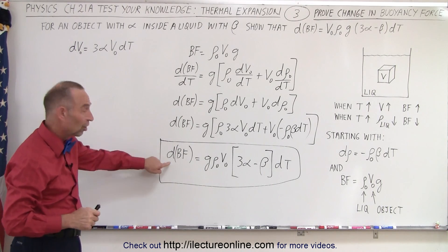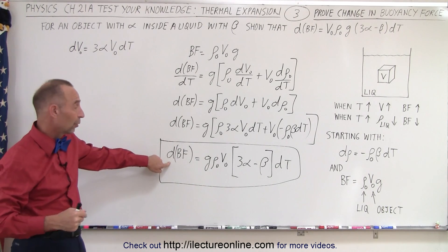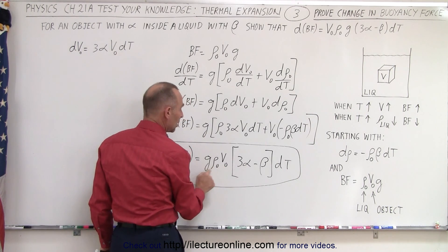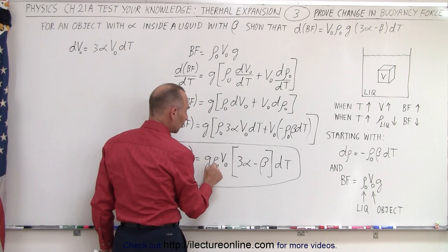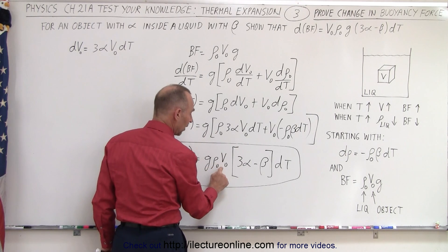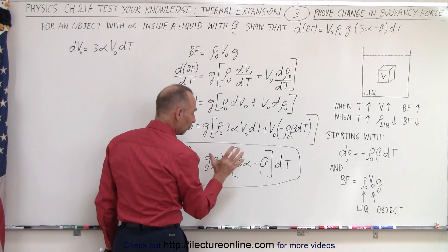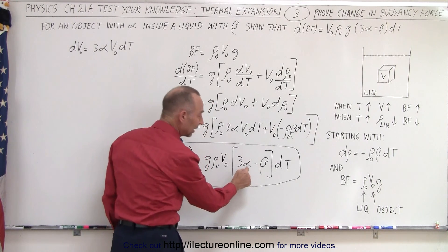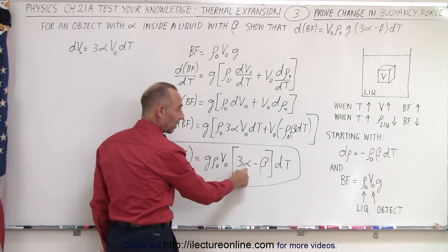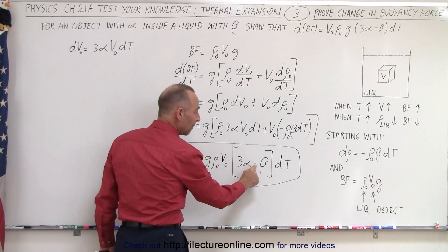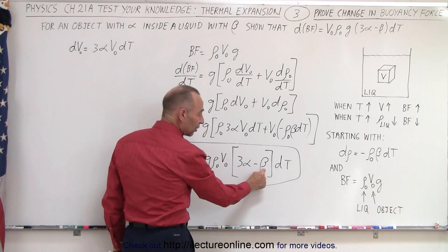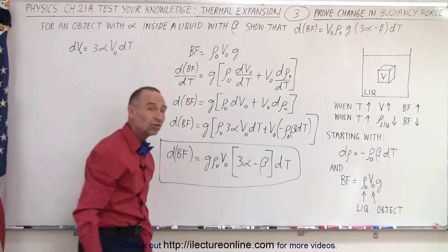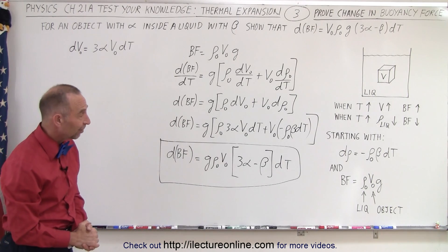And that is the equation we were trying to prove. The change in the buoyancy force as the temperature goes up is equal to the original density of the liquid times the original volume of the object times G, multiplied by (3 alpha minus beta) times the change in temperature — where 3 alpha accounts for the volumetric expansion of the object and beta is the volume coefficient of expansion of the liquid. And that is how it's done.